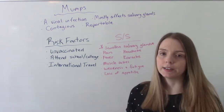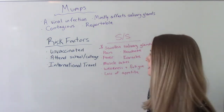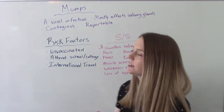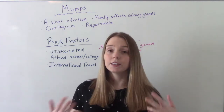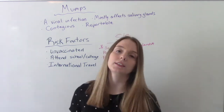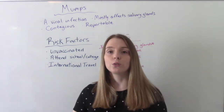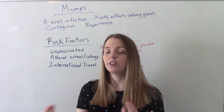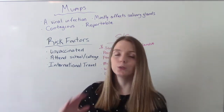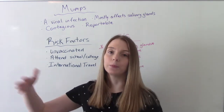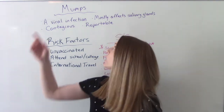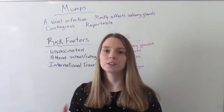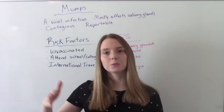Who's at risk for getting this? The unvaccinated. So this could be people who are unable to get vaccines because of their health, those who choose not to, or just very little babies who haven't gotten the full course of the MMR. Mumps is one of the M's in the MMR — so measles, mumps, rubella.